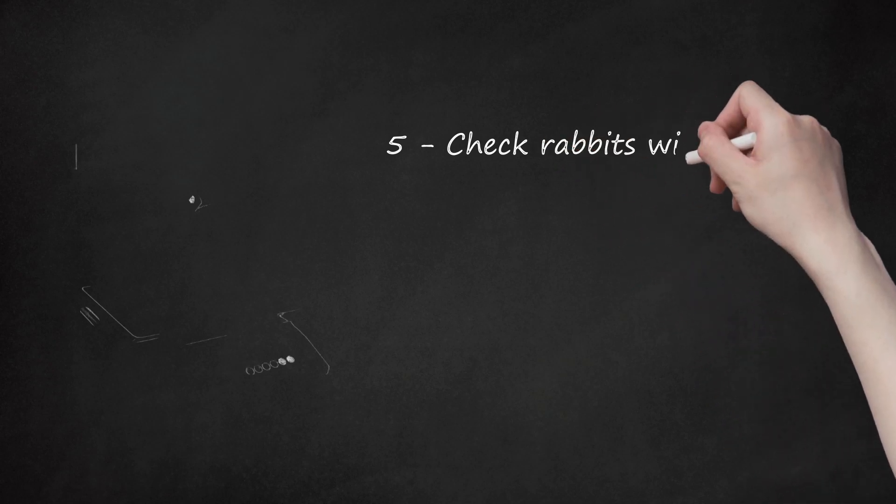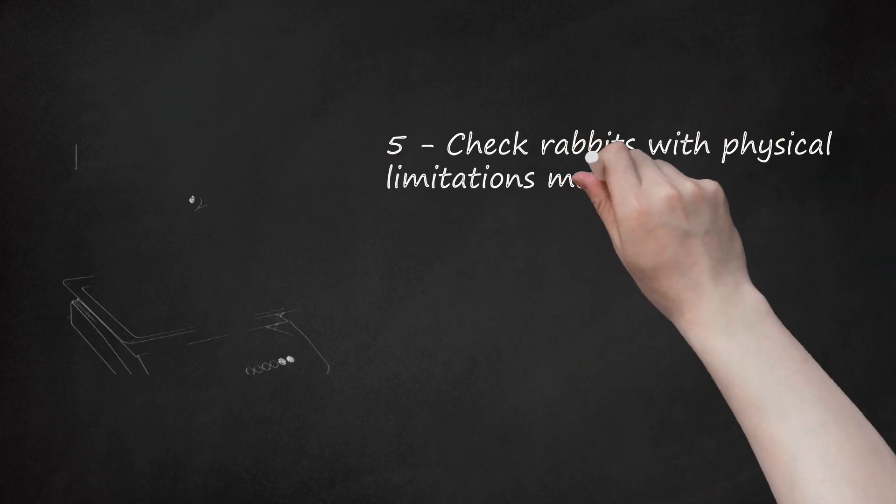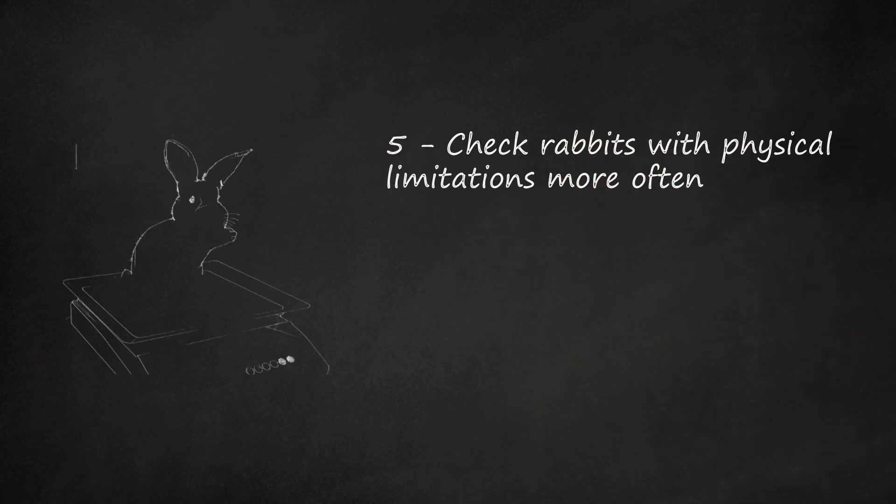5. Check Rabbits With Physical Limitations More Often. For example, overweight rabbits are physically unable to bend round and clean the pellets from their rear end. This makes them liable to getting pellets stuck in their fur. Key to prevention is keeping the rabbit at a healthy weight by feeding a diet of mostly hay, supplement with fresh vegetables and only a dessertspoon of pellets a day.